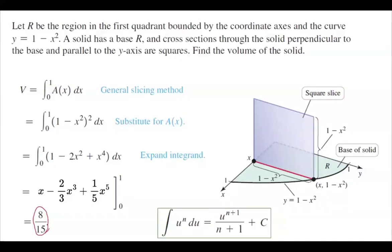This is the general method of finding the volume: find the area of the cross-section, plug it into the definite integral formula, and take the integral.